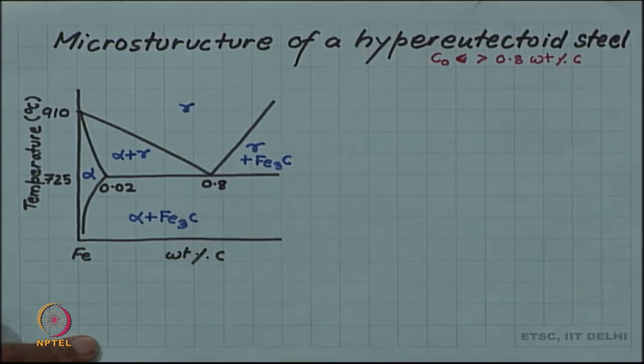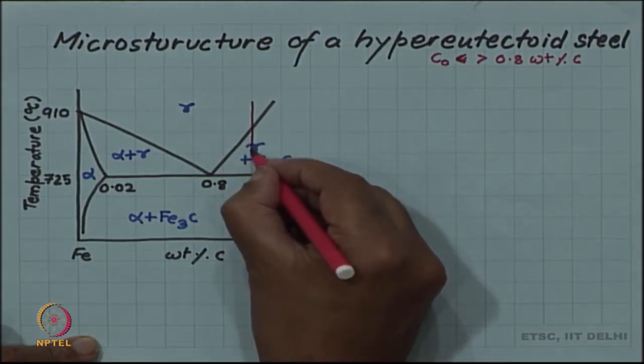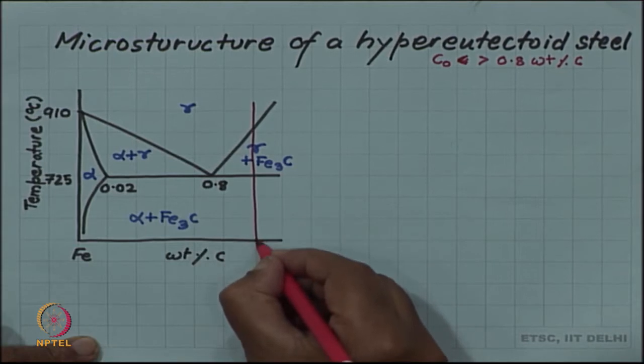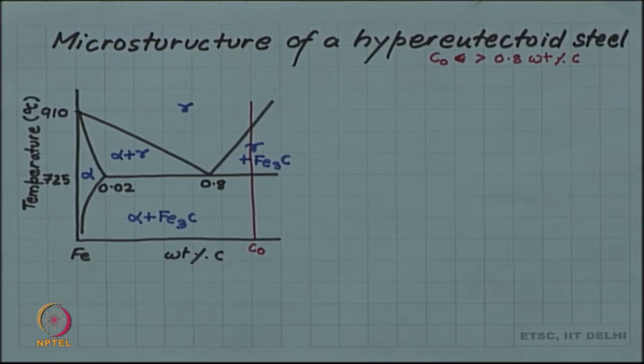It is on the right hand side of this 0.8 percent carbon which was the eutectoid steel. Let us take a vertical line denoting that composition. This line represents our hypereutectoid steel.